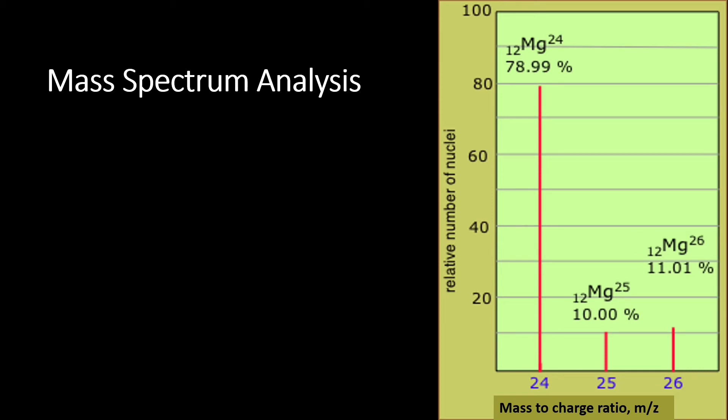From the mass spectrum, we could get the information regarding the relative abundance of each isotope. And if we have the isotopic mass of each isotope, that means we can calculate the average atomic mass for magnesium.